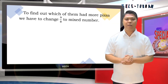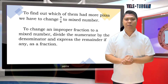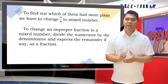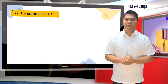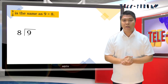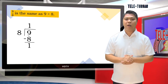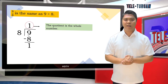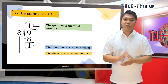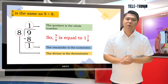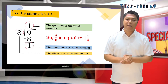To find out which of them had more pizza, we have to change 9/8 to a mixed number. To change an improper fraction to a mixed number, divide the numerator by the denominator and express the remainder, if any, as a fraction. 9/8 is the same as 9 ÷ 8. 9 ÷ 8 = 1, remainder 1 (since 1 × 8 = 8, and 9 − 8 = 1). The quotient 1 is the whole number, the remainder 1 is the numerator, and the divisor 8 is the denominator. So 9/8 = 1 and 1/8. Mr. Soriano and Mr. Santos had the same amount of pizza left.